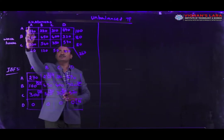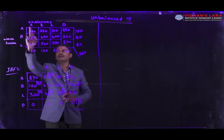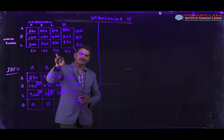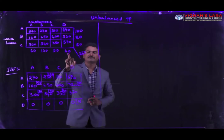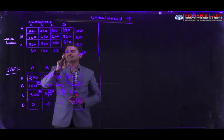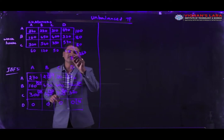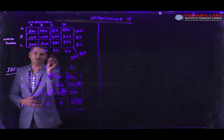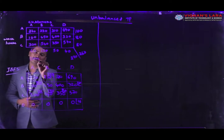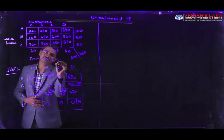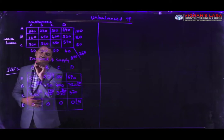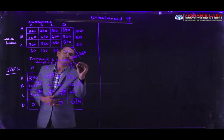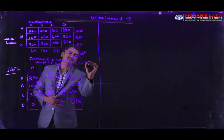Coming to the demand, from the customer's point of view: the first customer requires 60 units, second customer requires 120 units, third customer requires 50 units, and fourth customer requires 40 units. Total demand is 270 units. Our total supply is 260 units, so demand is not equal to supply. This is called an unbalanced transportation problem.